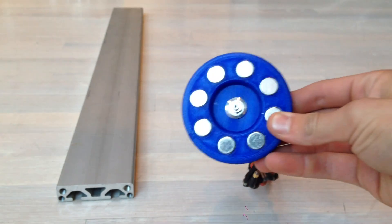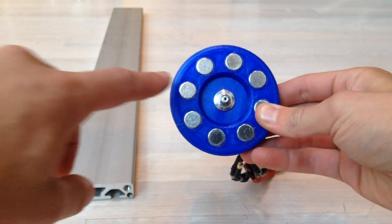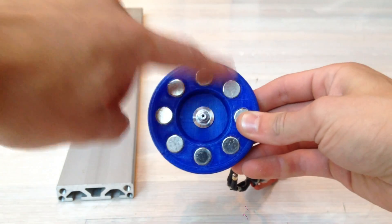So here's a disk of eight magnets, and these magnets are in an alternating pattern, meaning one is north, one is south, one is north, one is south, and so on.